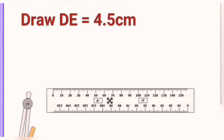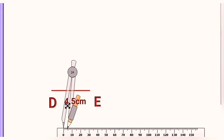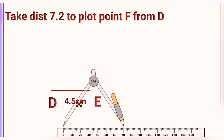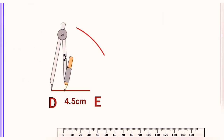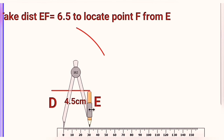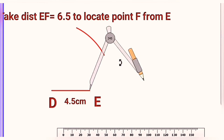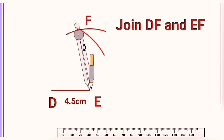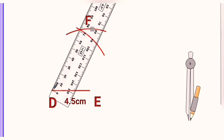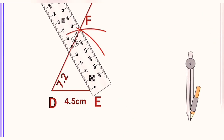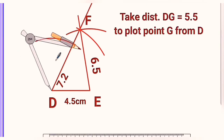For quadrilateral DEFG, we draw segment DE first — distance 4.5. After drawing DE, we take distance DF — 7.2 — in the compass to plot point F from point D and draw the arc. Then take distance EF — 6.5 — carefully, lift the metal tip and keep it on point E, and mark the arc. That gives point F's location. Now join those points so that diagonal DF and side EF are drawn.